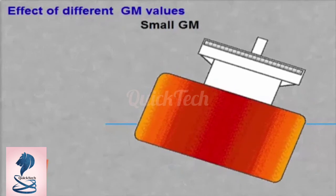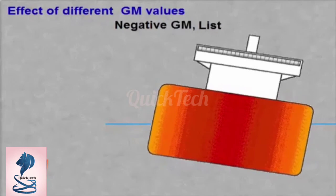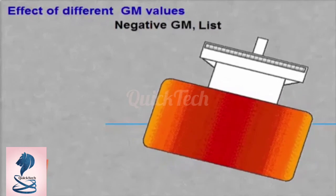A negative GM may result in a constant list if exposed by an external force. This is because G was higher than M, but after heeling the GM might be positive again due to the changed volume of the underwater hull.